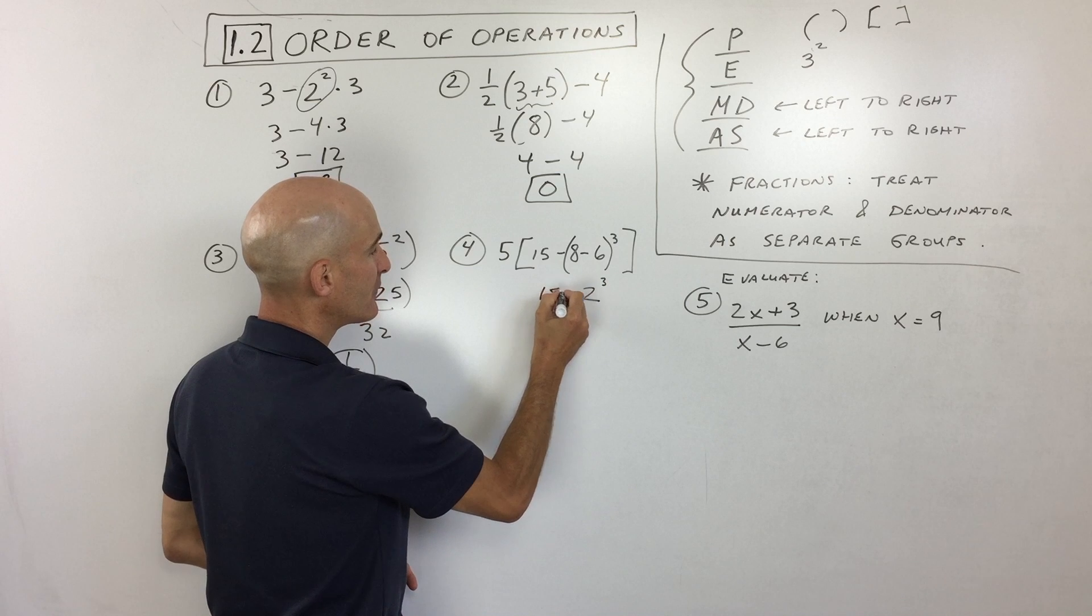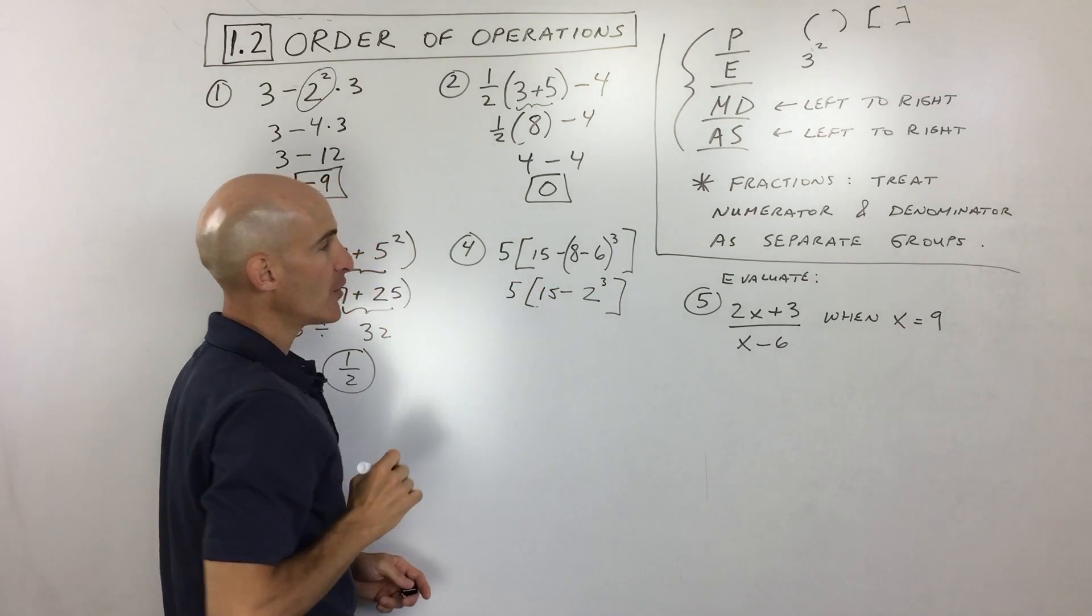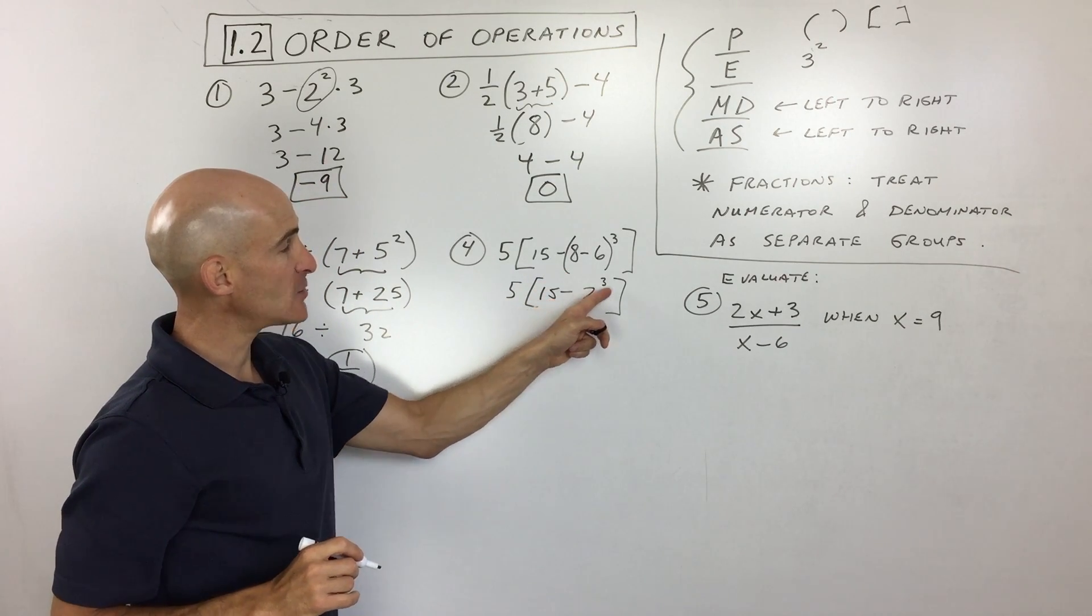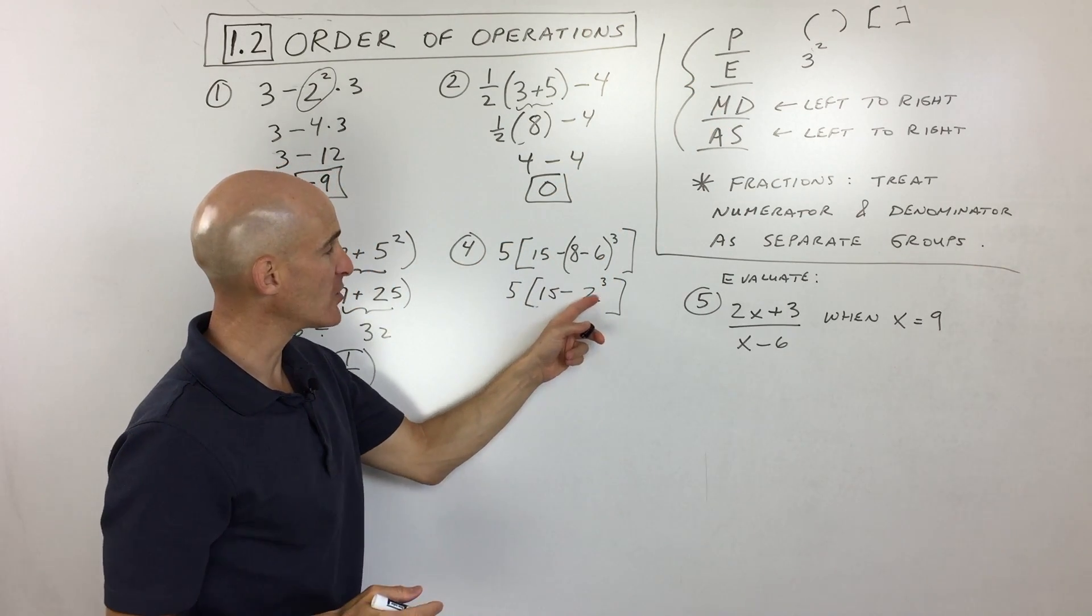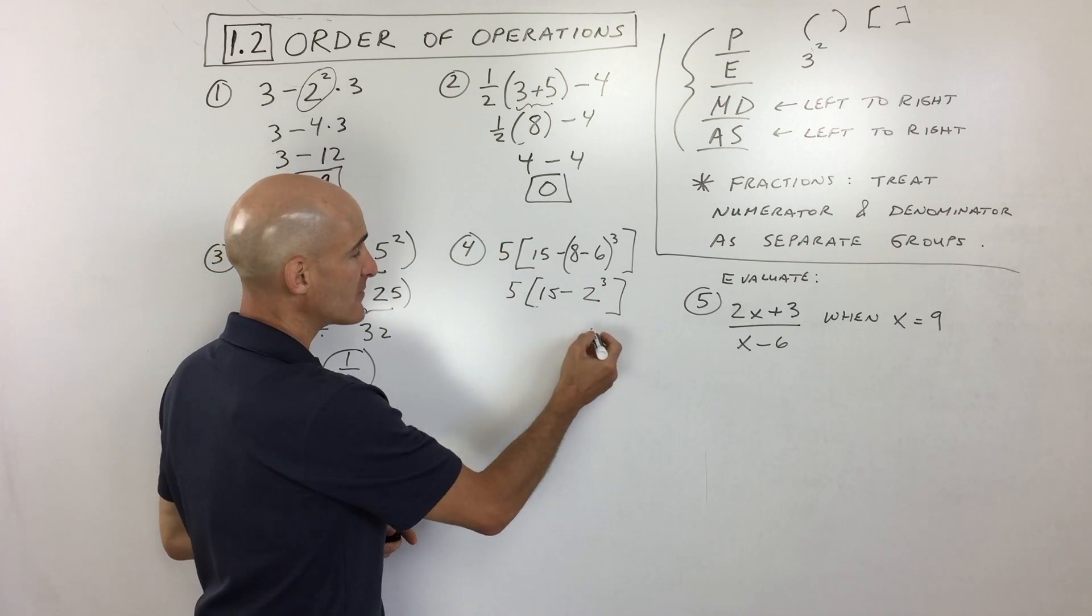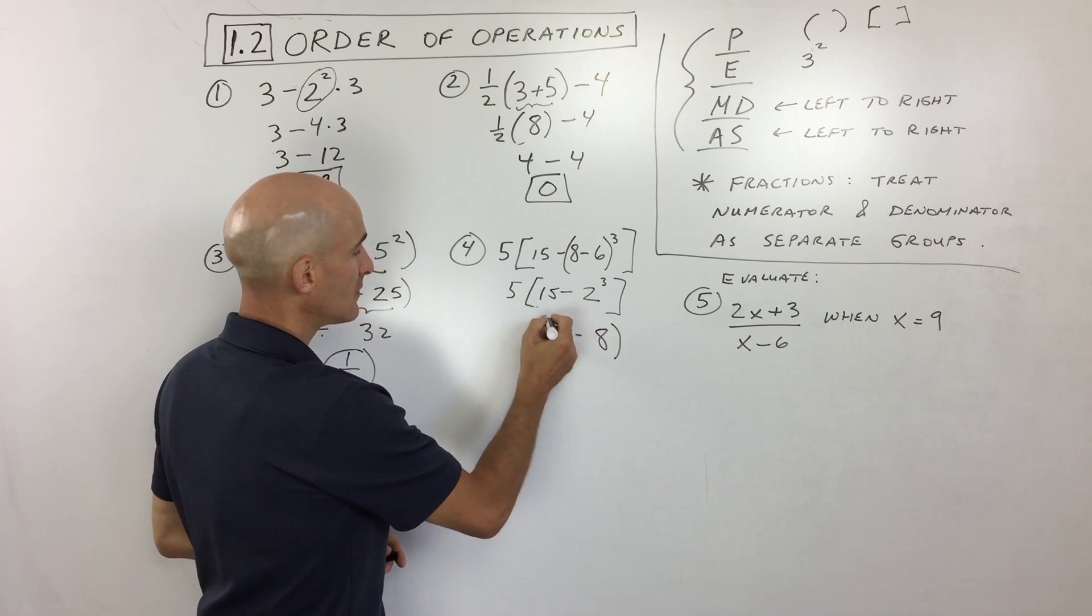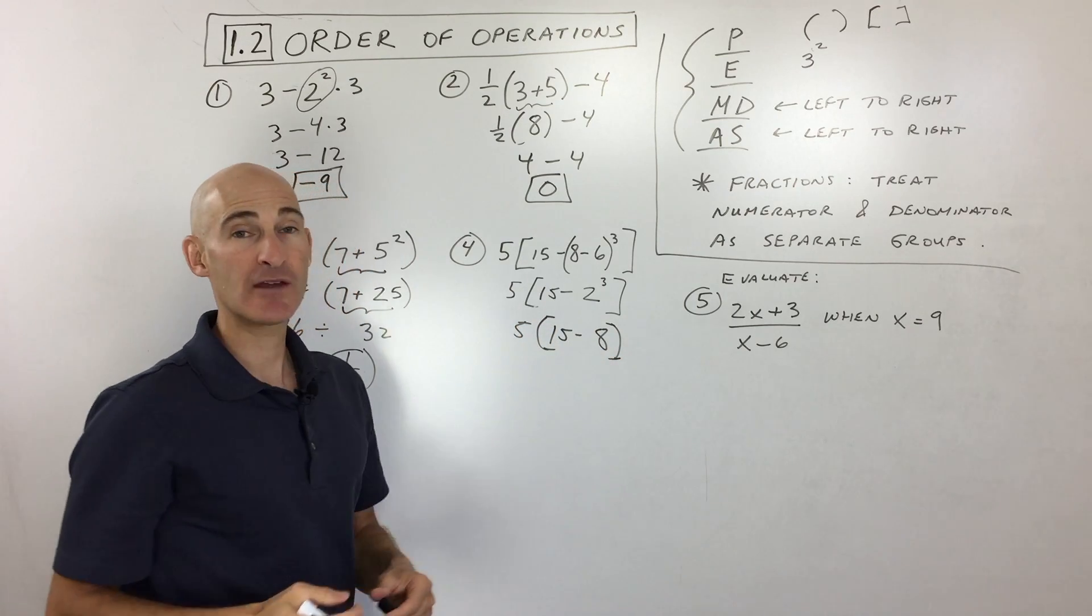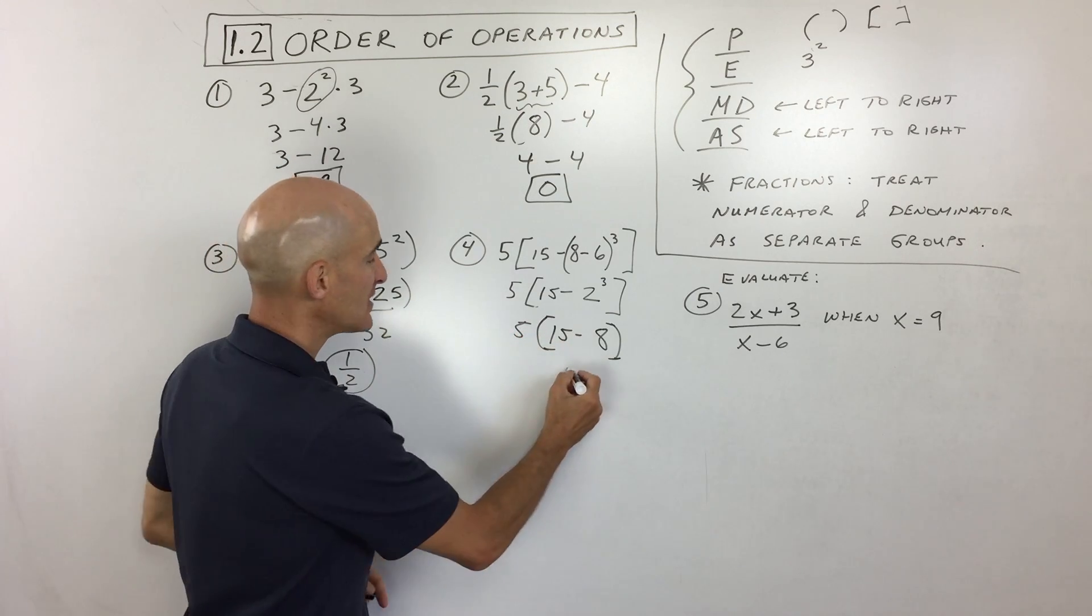To the third power. I'm bringing down the 15 and the 5. So I did the innermost parentheses. Now we've got subtraction and exponents, but exponents is more important than subtraction. 2³ means 2·2·2, that's two three times, which is 8. Bring down the 15 and the brackets. Within these brackets we have to finish this first before the multiplication.